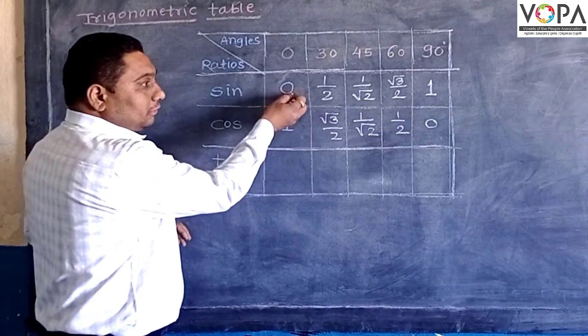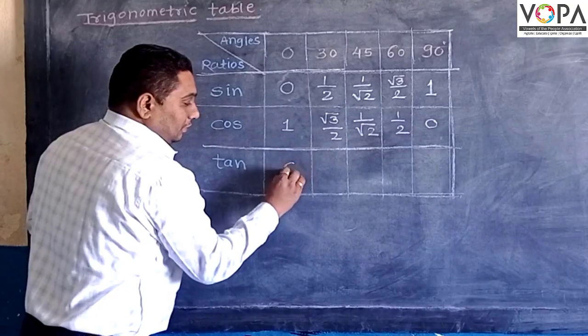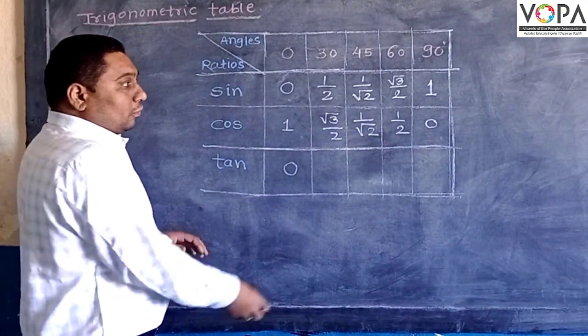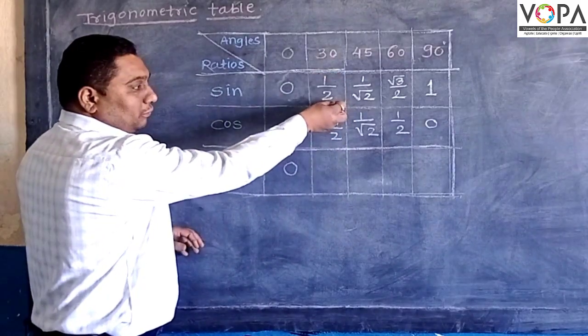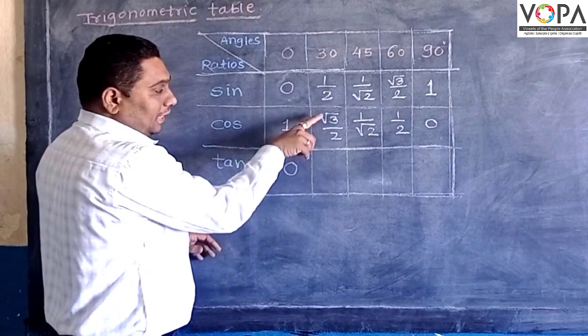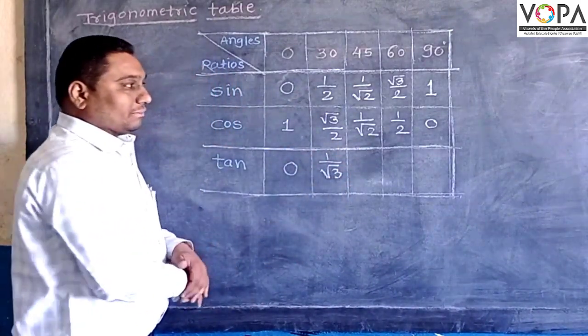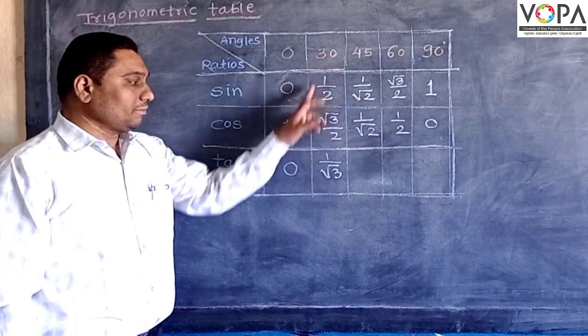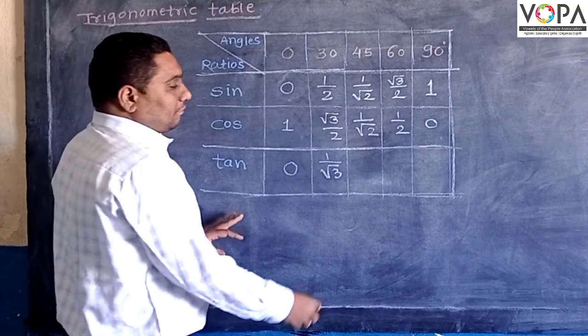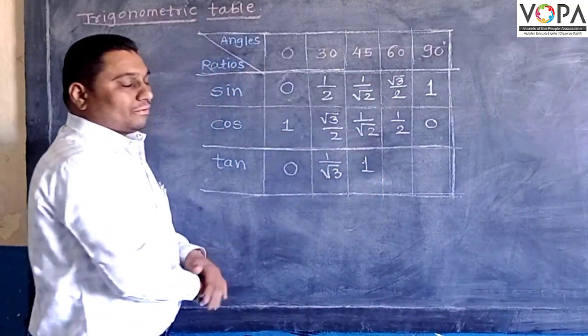So 0 over 1 equals 0. One-half over square root of 3 over 2—it reverses to give 1 over square root of 3. This is the value of tangent 30 degree. For tangent of 45 degree, both values are the same, hence it equals 1.